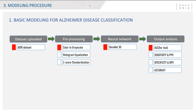After this, the pre-processed data is used as input data for the neural network, and the model started to train, validate, and test. We analyzed the model performance quantitatively using AUC, sensitivity, specificity, and accuracy, and so on.